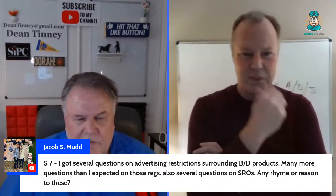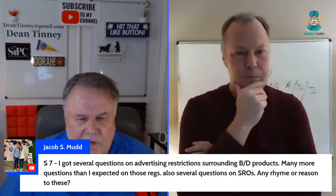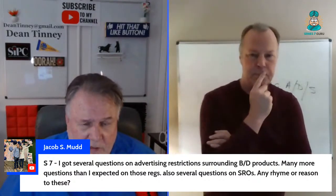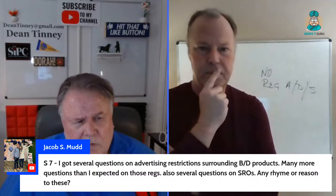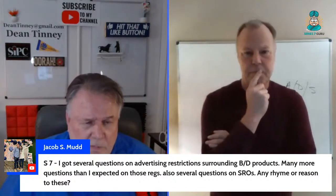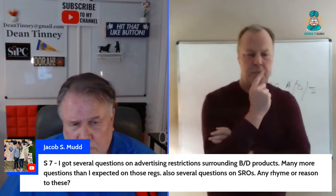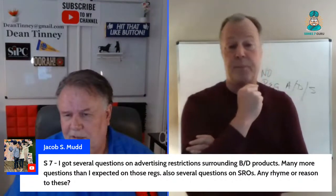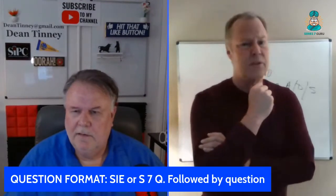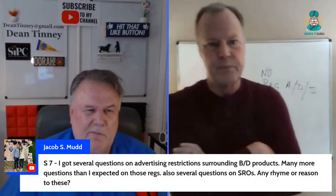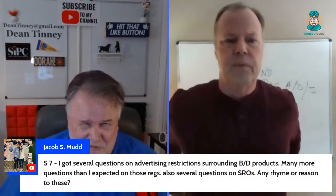On BD products and communications: the main thing people get tested on is the difference between retail communication and correspondence. SROs would be FINRA and New York. Retail communication has to be approved pre-distribution; correspondence is reviewed post-distribution. Advertising on the Series 7 has been tested. Don't think too much about rhyme or reason with these exams — just ride the horse in the direction it's going.